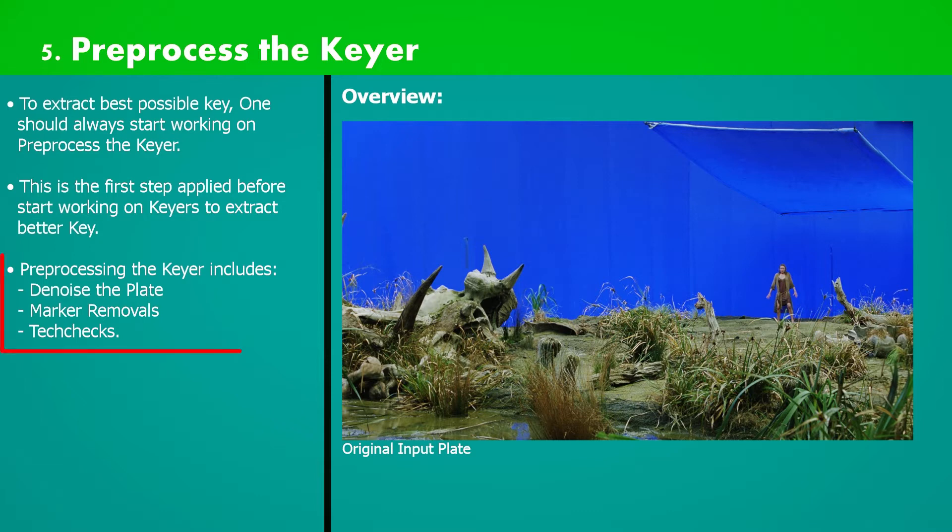For preprocessing the keyer, the process includes denoising plate, marker removal, and tech checks. So at first, let's take a look at denoise.